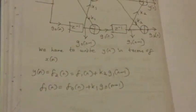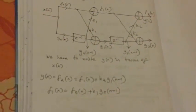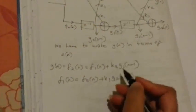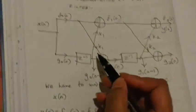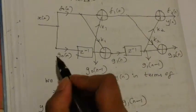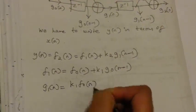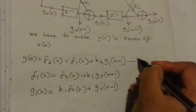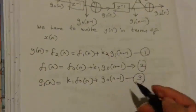We have to write Y of N in terms of X of N. Y of N is F2 of N. Because it's a second order, Y of N equals F1 of N plus K2 times G1 of N minus 1. F1 of N is nothing but F0 of N plus K1 times G0 of N minus 1. And G1 of N is K1 times F0 of N plus G0 of N minus 1.